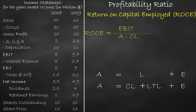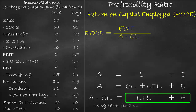Then we can move current liabilities to the other side, flipping the sign, which would make our formula look like the following: assets minus current liabilities are equal to long-term liabilities, or non-current liabilities, plus shareholders' equity. Please note that shareholders' equity is always long-term, so long-term liabilities plus shareholders' equity just refers to long-term financing in general.